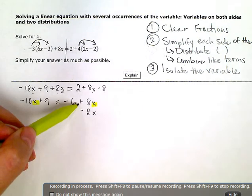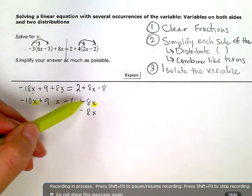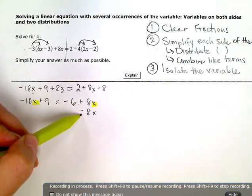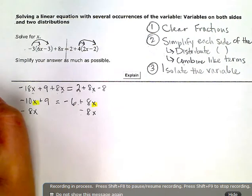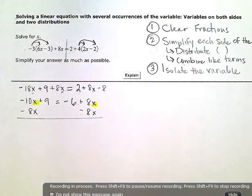I'm going to choose to zero out this term on the right, this x term. Right now it's plus 8x. The opposite would be to subtract 8x.